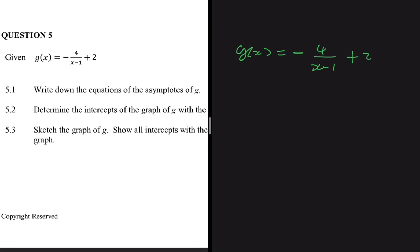The general formula of a hyperbola is f(x) equals a divided by x plus p, plus q. We need the vertical asymptote and the horizontal asymptote. The vertical asymptote is given by x equals minus p, and the horizontal asymptote is given by y equals q.